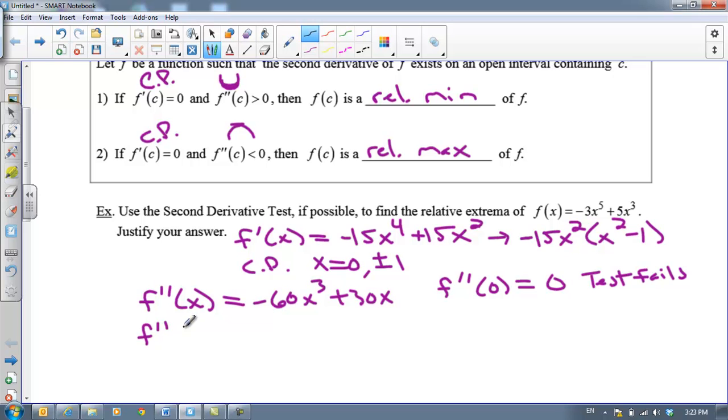I now want to find F double prime at two other places, one and also at negative one. Let's plug in one into the second derivative. That would be negative 60 plus 30, which would be negative 30, which is less than zero. We're concave down and that creates a relative maximum. So there is a relative maximum at x equals one because F prime is zero and F double prime is negative.